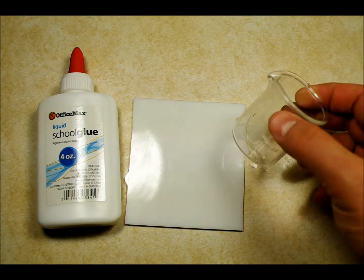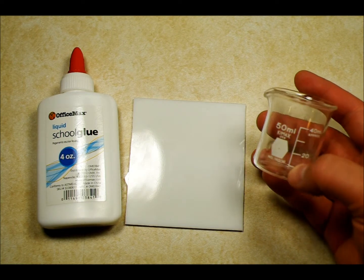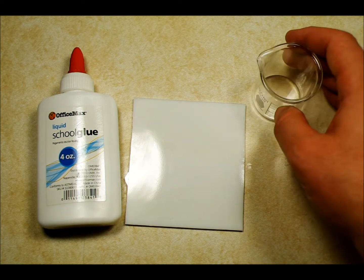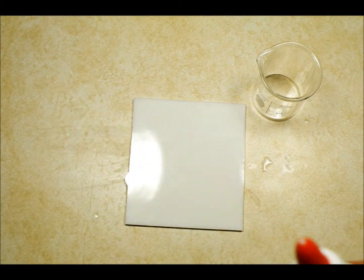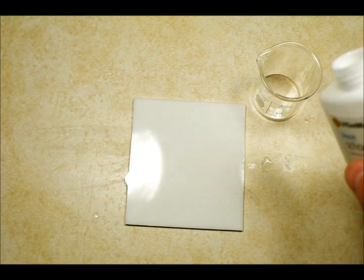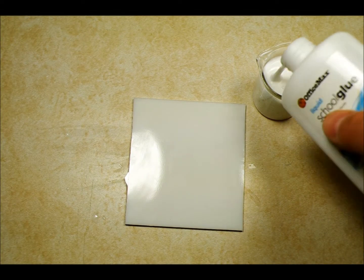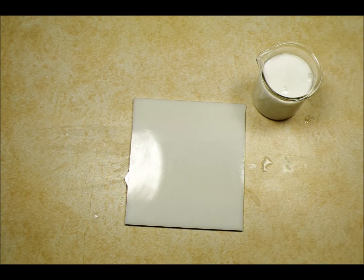So the first thing you'll need is some kind of cup that you can pour out of. This is a 50ml cup. It actually holds a little bit more than that. This cup will work just fine for this size, for the 6x6 opalotypes that I'm making.